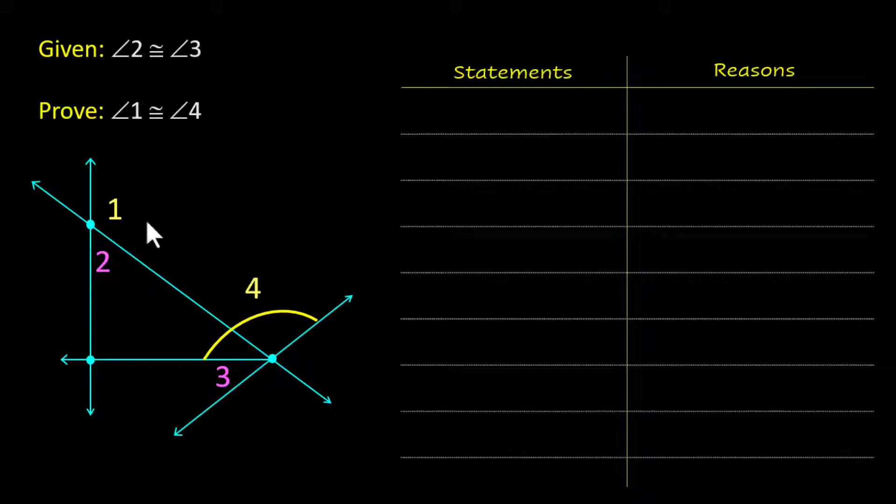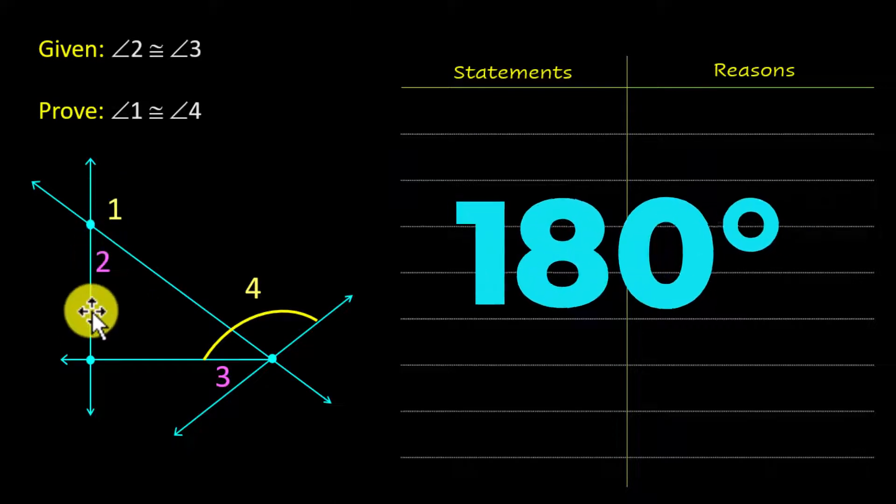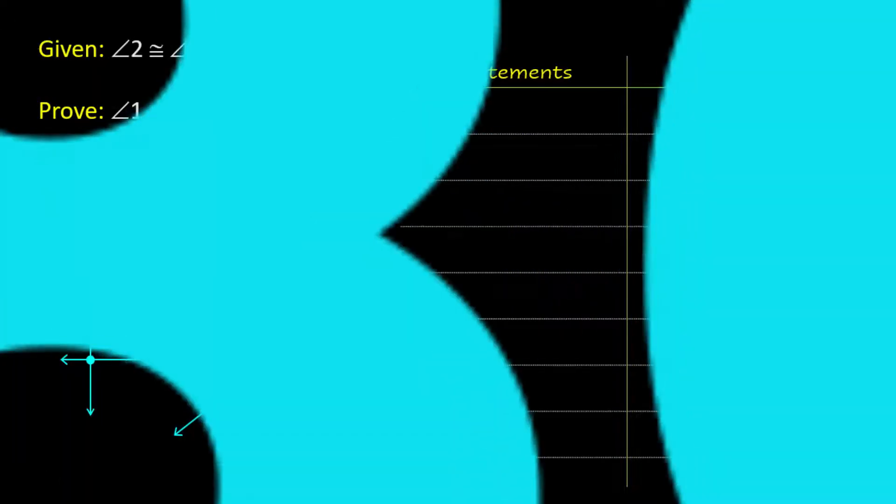Let's think about this for a second. Angle 1 and angle 2 add together, they're a linear pair, they're making a straight line right here. And 3 and 4 are also making a straight line. So these 2 add up to 180 and these 2 add up to 180.